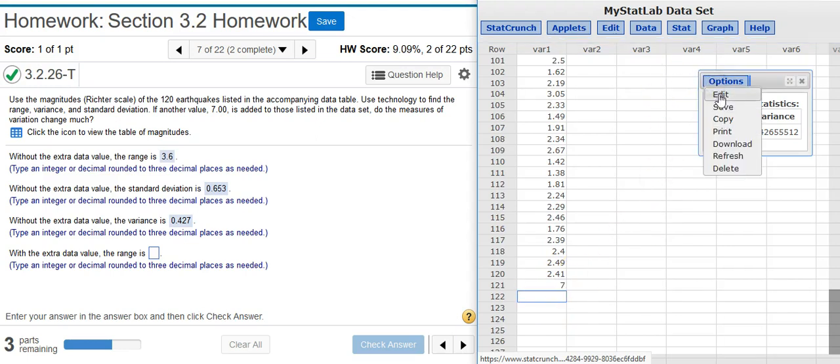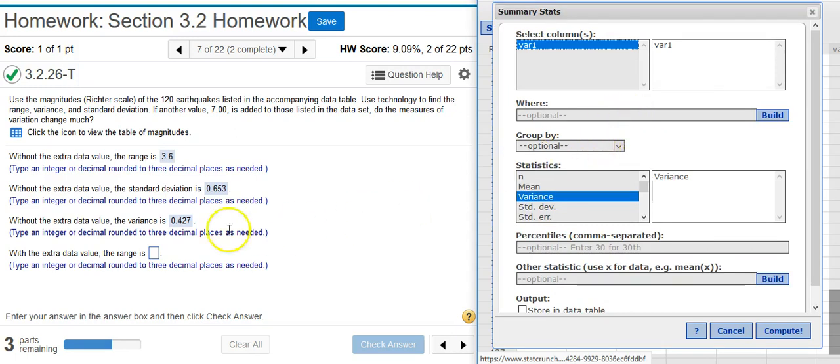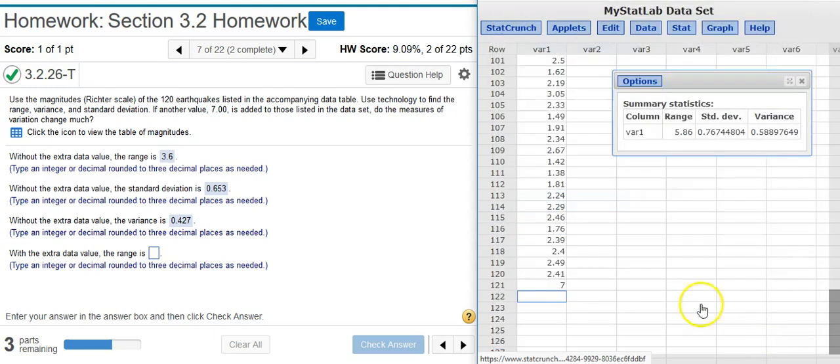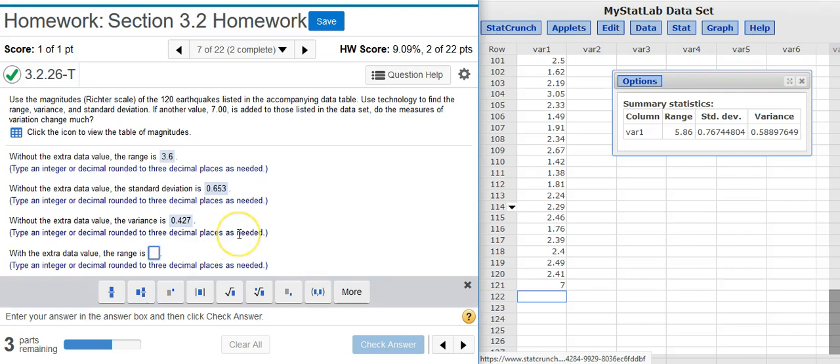Now I go back to my Options window, and I know I'm going to have to calculate the same numbers again, so I'm just going to select them in the same order: the range, standard deviation, and the variance. This time I don't have to keep going back and forth. I get everything I need for the rest of the problem here in one handy dandy results window. So I'm just going to take the numbers off the results window, and I'm asked again the range rounded to three decimal places.